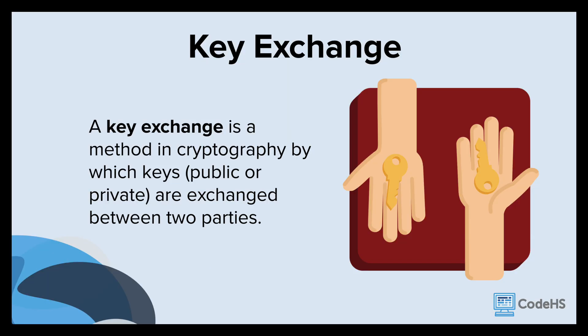For both symmetric and asymmetric encryption, there has to be a secure way to share keys between the sender and the receiver. This is called a key exchange. In symmetric encryption, the same key is used to encrypt and decrypt data, so the key must be shared with the receiver to be able to decrypt the message. Sharing this key between parties must be done in a very secure manner, since anyone who intercepts it can now decrypt the message as well.